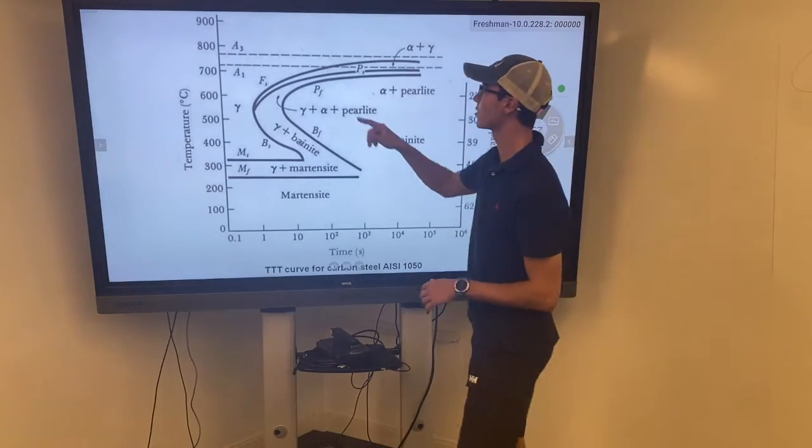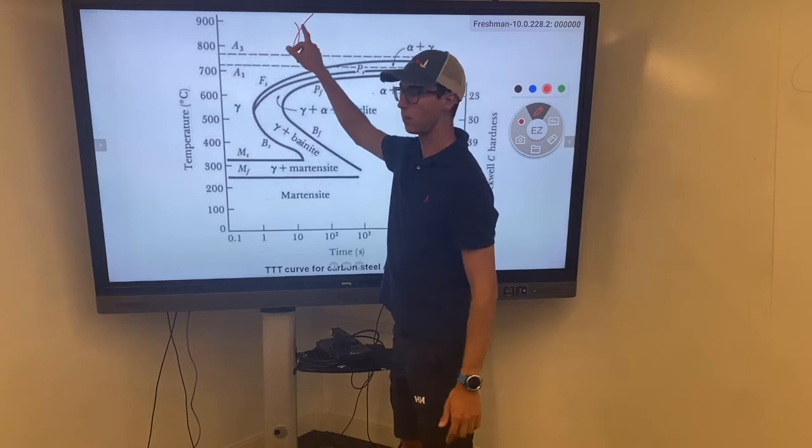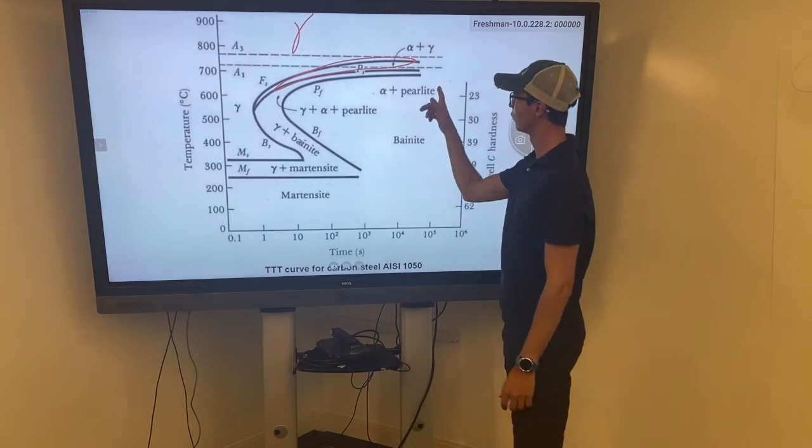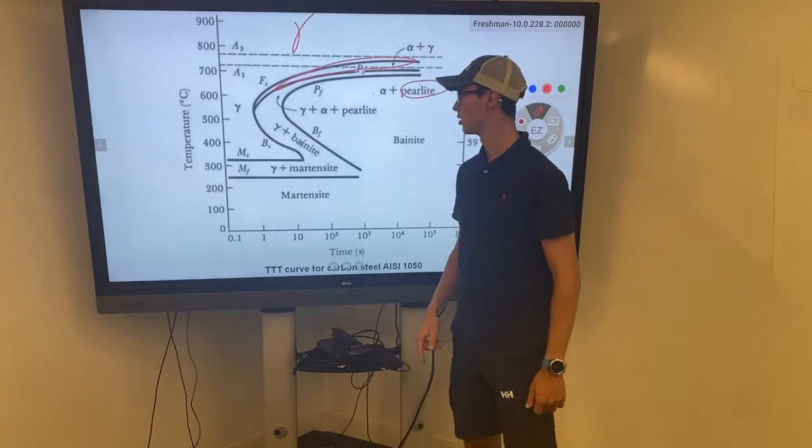Alright, so first of all we have austenite forming up here. Next we can see a formation of primary ferrite and over here we can see a formation of pearlite.